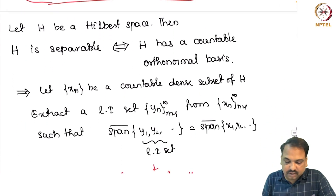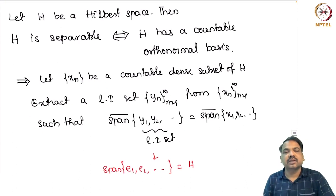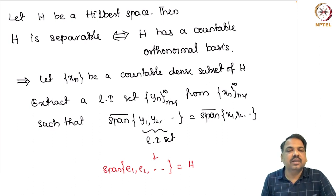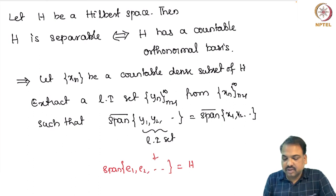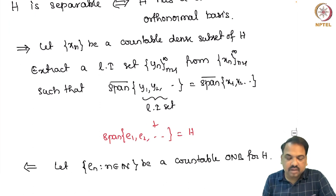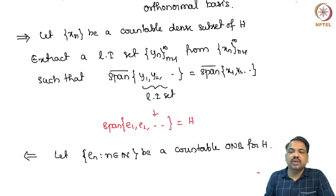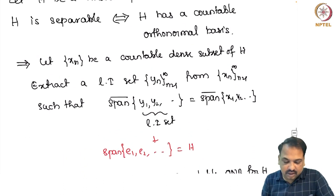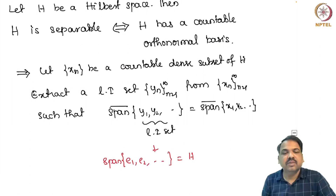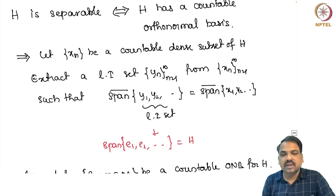Now we can ask: what are all the separable Hilbert spaces? The answer is given by the following result: if you have a Hilbert space H, then it is separable if and only if it has a countable orthonormal basis. The proof uses the Gram-Schmidt orthogonalization process. We start by assuming H is separable, meaning it has a countable dense subset, say x_n.